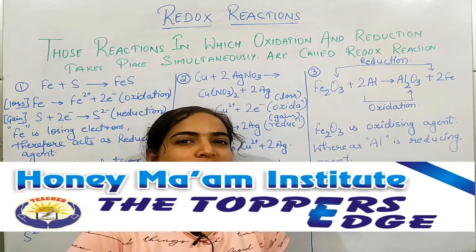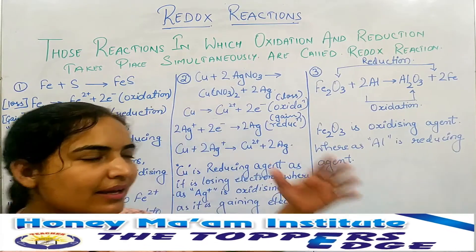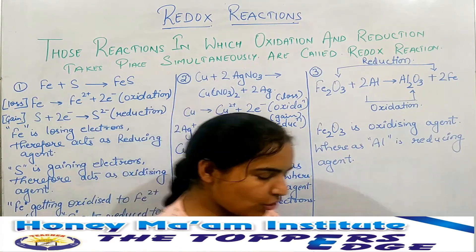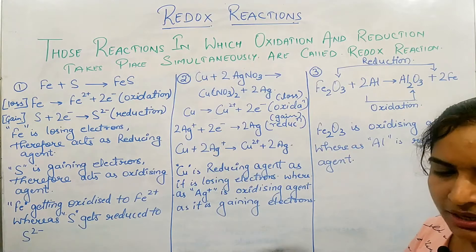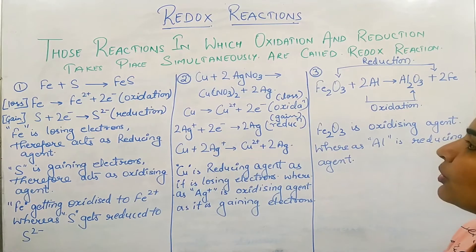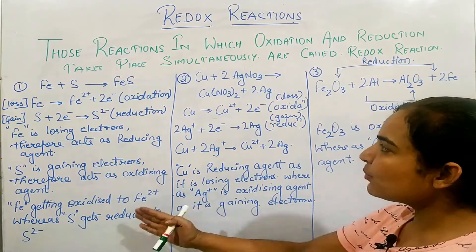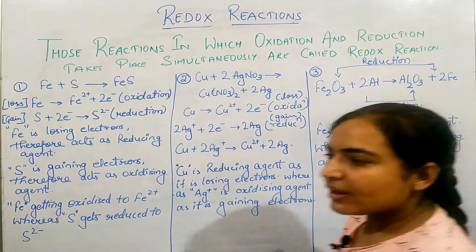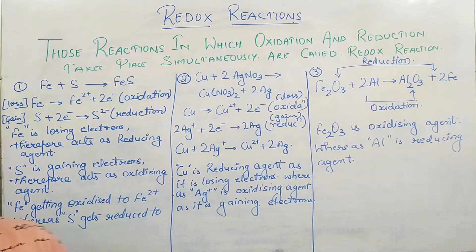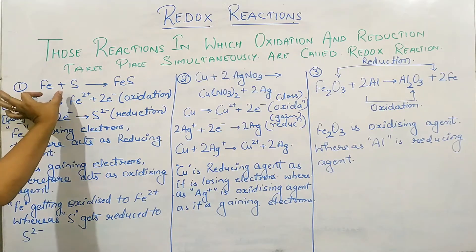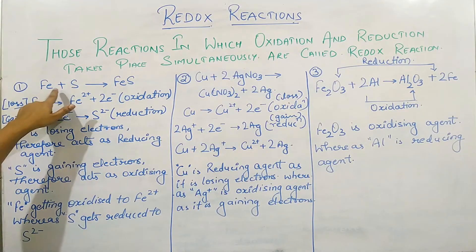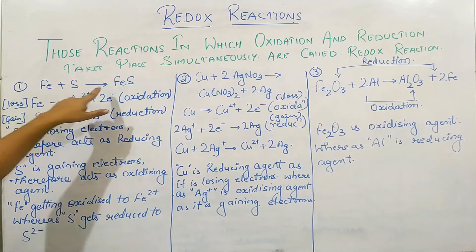Hello everyone, I am back with more examples on redox reactions, as discussed in my first topic today. I have given three more examples on redox reactions where oxidation and reduction take place simultaneously. Here is a very small reaction: ferrous and sulfur reacting with each other to form ferrous sulfide.